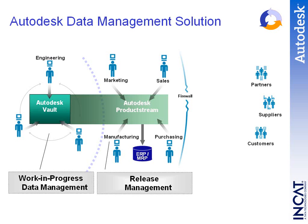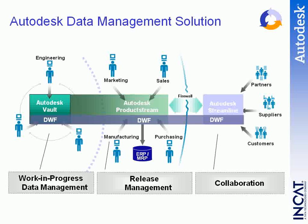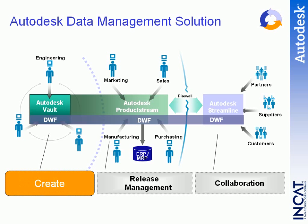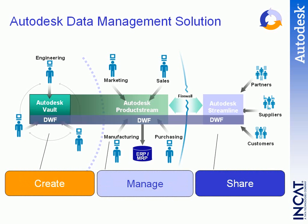Product Stream can also accelerate purchasing cycles. Sales can look at existing data for customer presentations, and marketing can take advantage of it in their collateral. For those outside the firewall — such as partners, vendors, and customers — Autodesk Streamline is the collaboration tool that allows sharing aspects of designs with external partners without granting access inside the corporate network. In summary: Vault creates data more effectively, Product Stream manages it throughout the enterprise, and Streamline shares it with external partners.